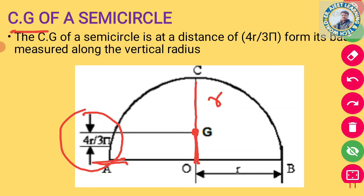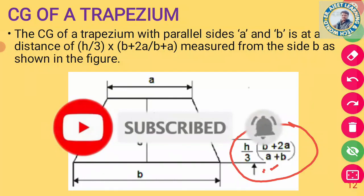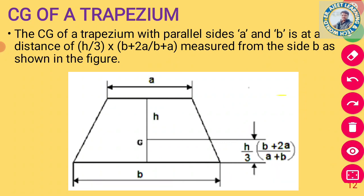CG for the semicircle is 4r/3π. CG for the trapezium is: h/3 × (b + 2a)/(b + a), where b is the larger parallel side and a is the smaller parallel side. This gives the center of gravity location for a trapezium with two parallel sides a and b.